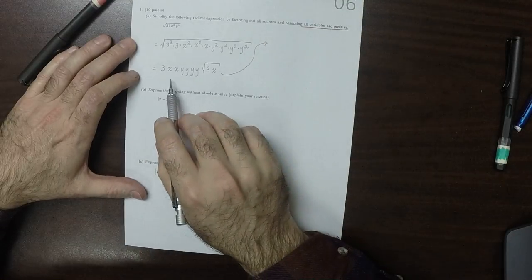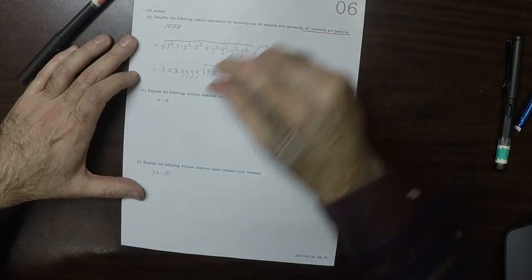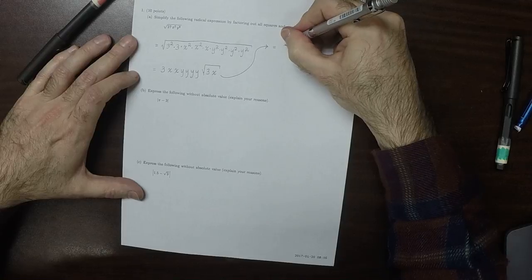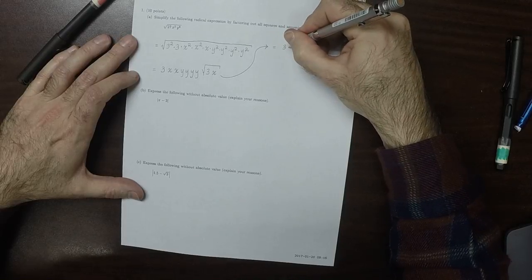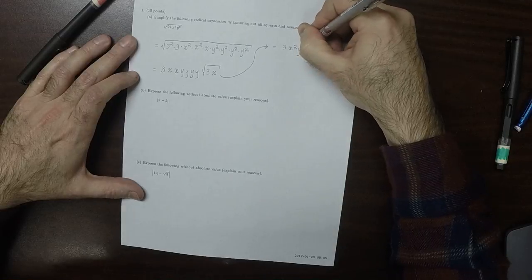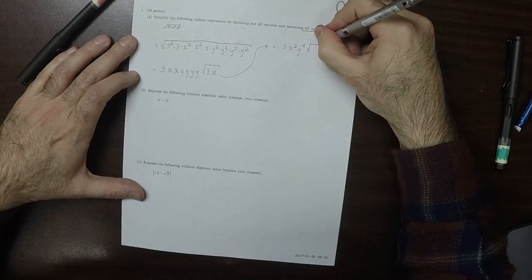So of course, normally you write those in this way. So that would be 3x squared, y to the 4th, and then square root of 3x.